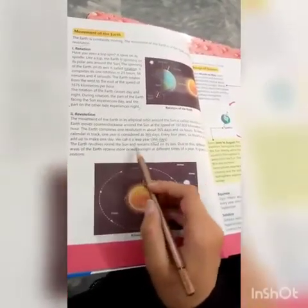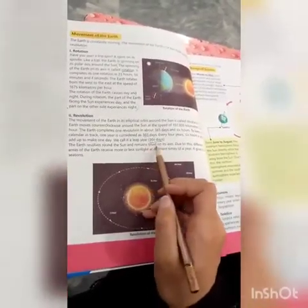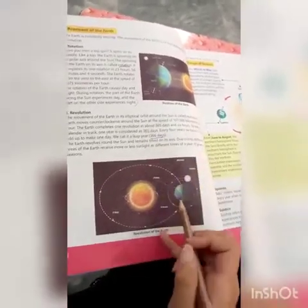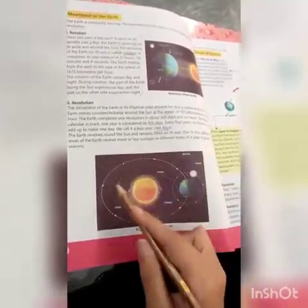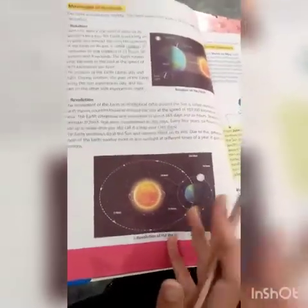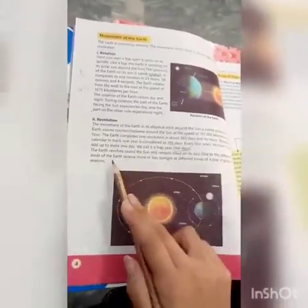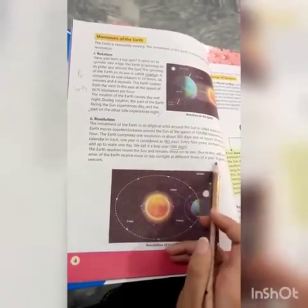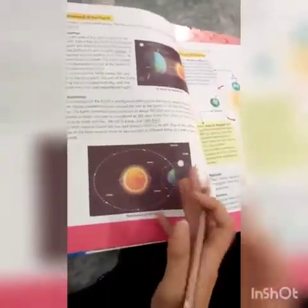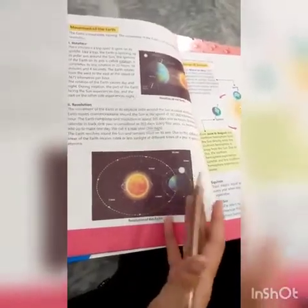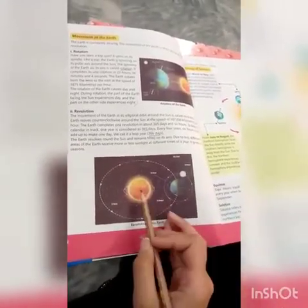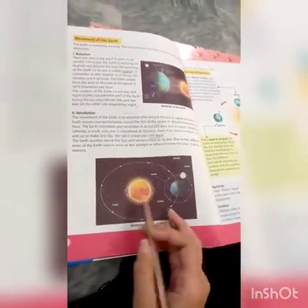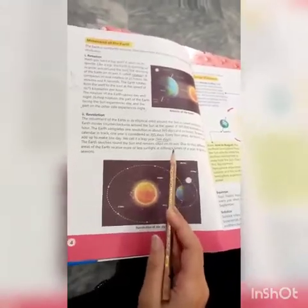The Earth revolves around the sun while remaining tilted on its axis. Due to this tilt, different areas of the Earth receive more or less sunlight at different times of the year. This is what causes the change of seasons.